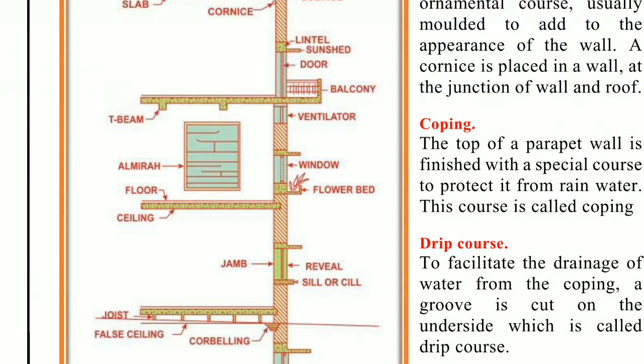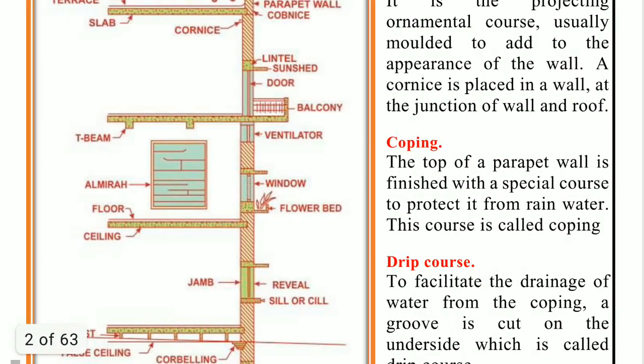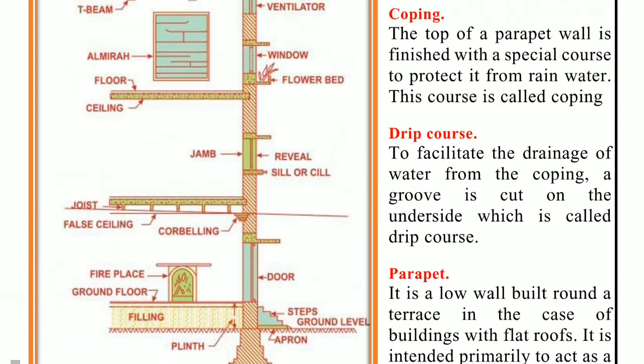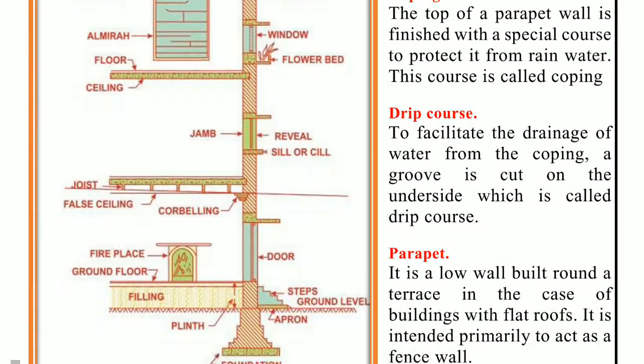The horizontal course provided at suitable levels between the plinth and the cornice is known as a string course. It breaks the monotony of a plane surface and is sometimes molded and given architectural treatment. The string course is suitably weathered and throated so as to throw off rainwater clear of the wall surface.